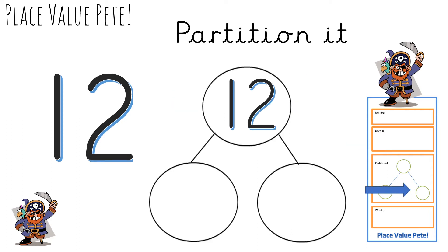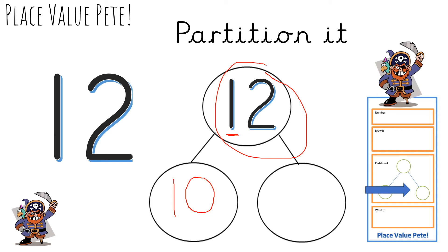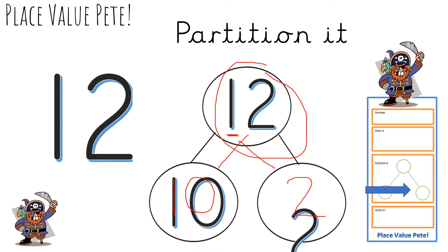Next one is partition it. Can you remember how to do that from the video yesterday? So we're looking at the number 12. How many tens has it got? That's right, it's 10. One 10 is 10, so we don't put one in this box — we put 10 in that circle. And the next one is how many ones? We have two. So you've partitioned number 12 into 10 and 2, into tens and ones. And that's what Place Value Pete needs you to do today — 10 and 2.